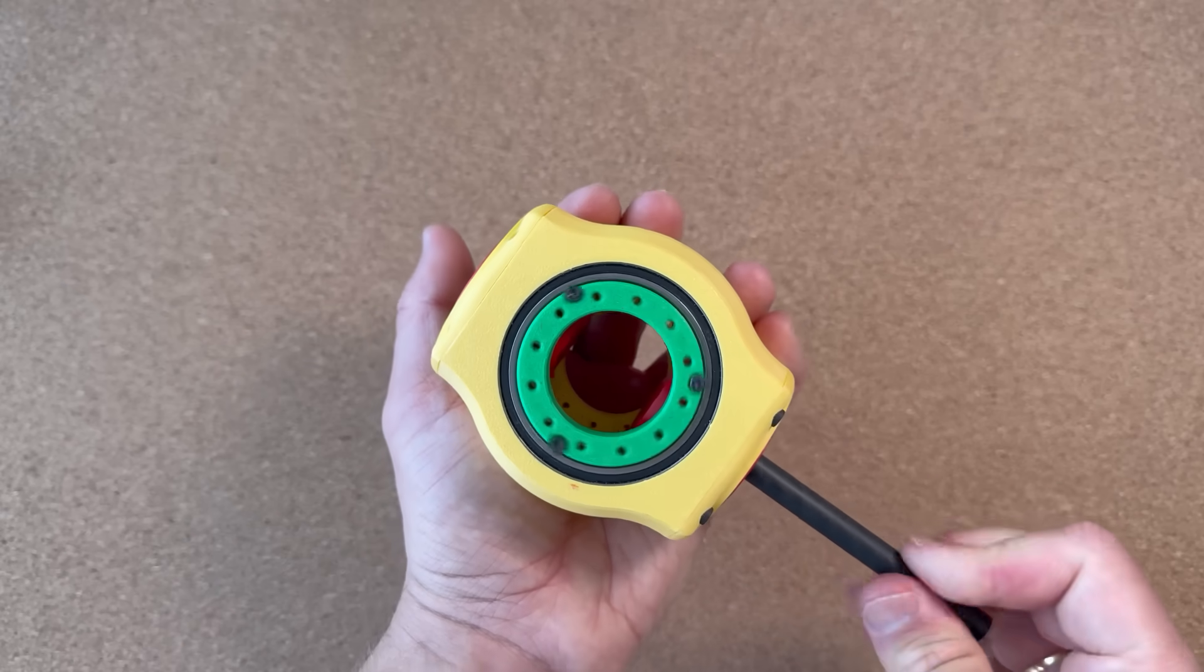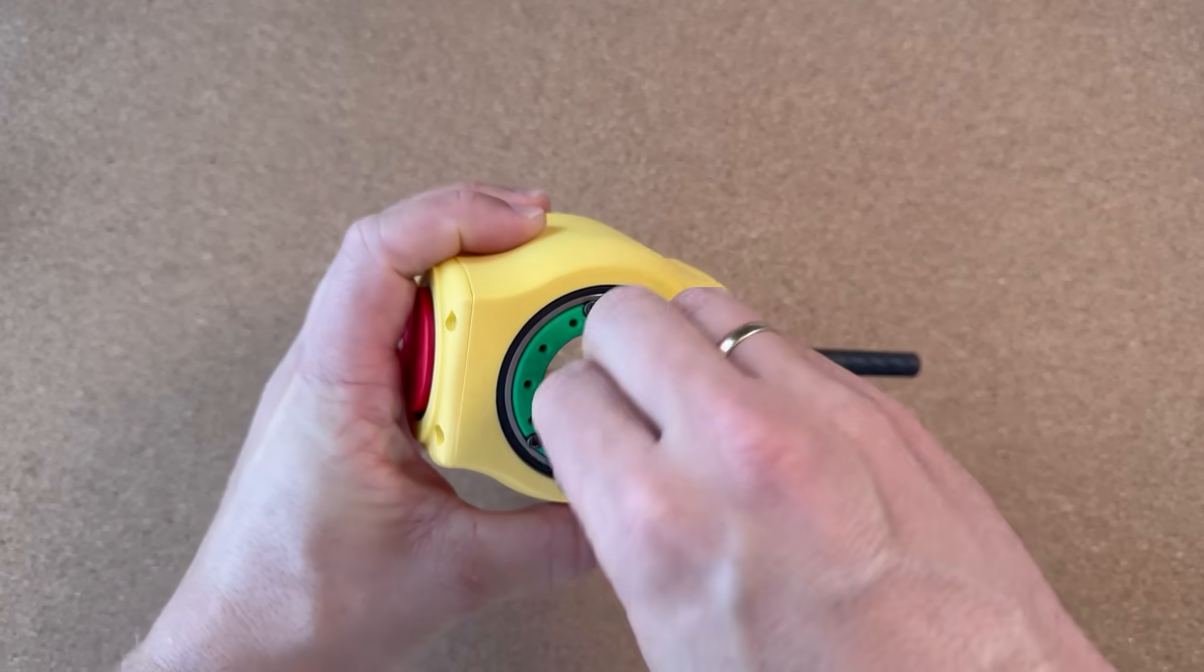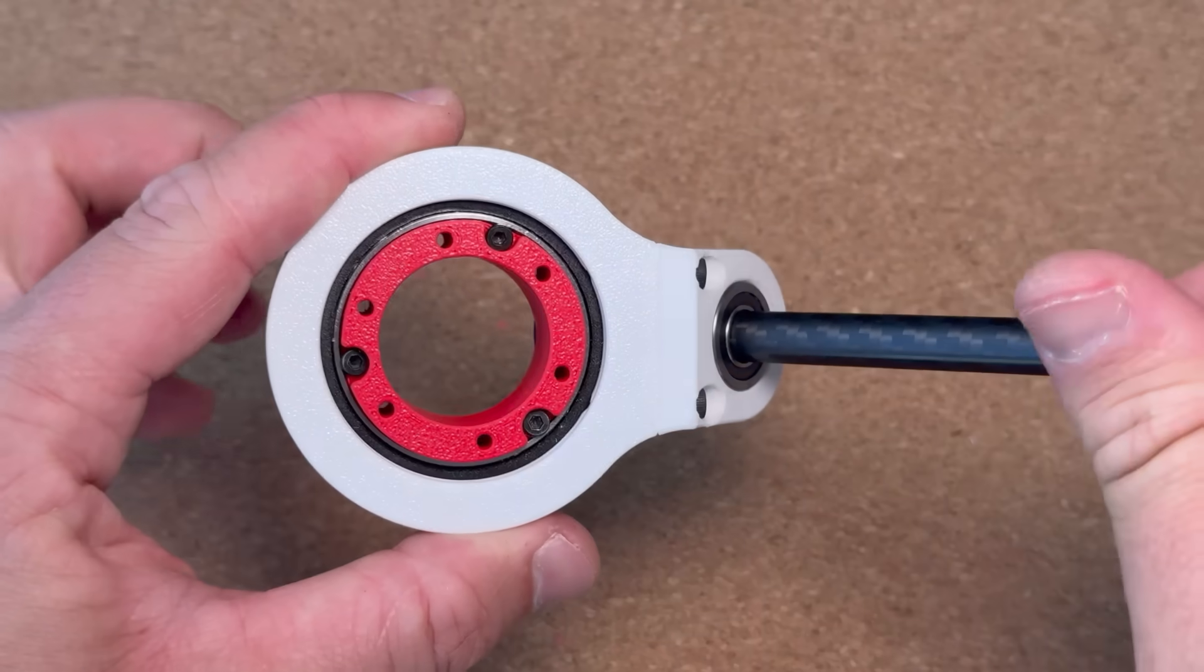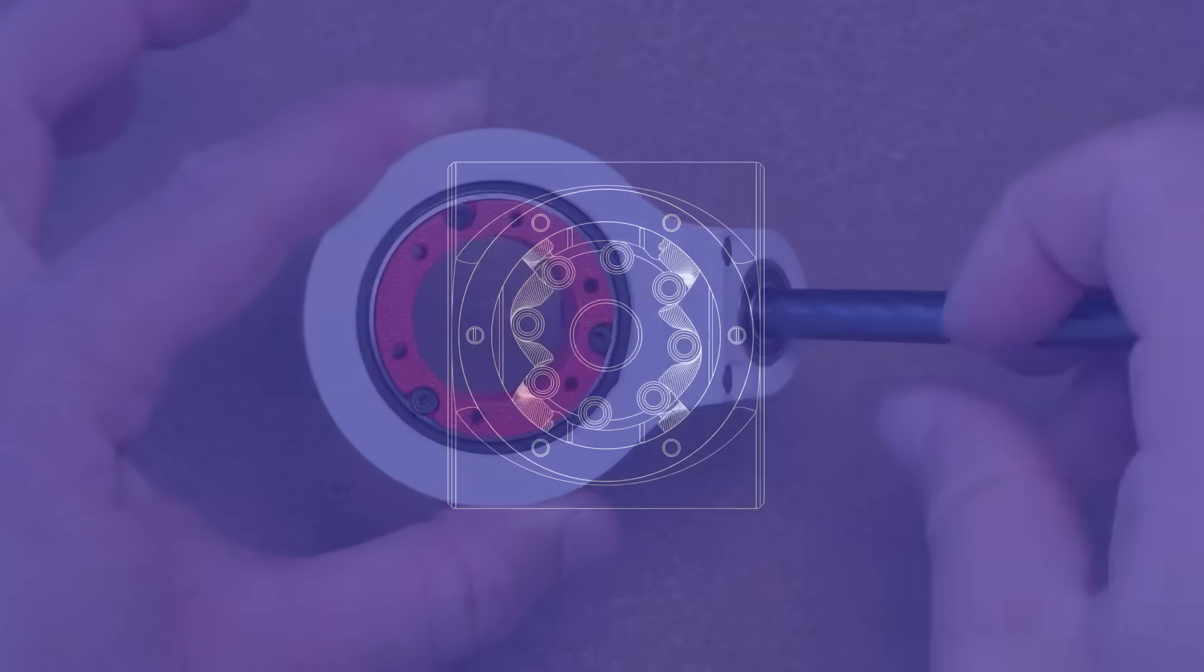This is a Zero Backlash Angular Gearbox. There's no bevel or hypoid gears, it's not a worm drive, it has no cables and belts, it can work at almost any angle, and I spent over six months figuring out this design.